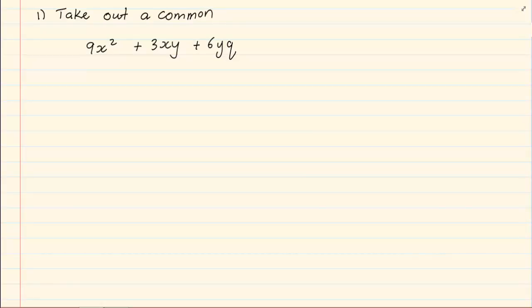When we look at the following sum and we want to do factorizing, the first thing we have to do is see how many terms there are. A plus and minus breaks terms. So in this expression, there are three terms. What is the same in each term? If we look at the nine, it's three times three. Then we've got x squared. The second term, we've got three xy, and in the last term, we've got six, which is three times two yq. The only thing that is the same in each term is the three.